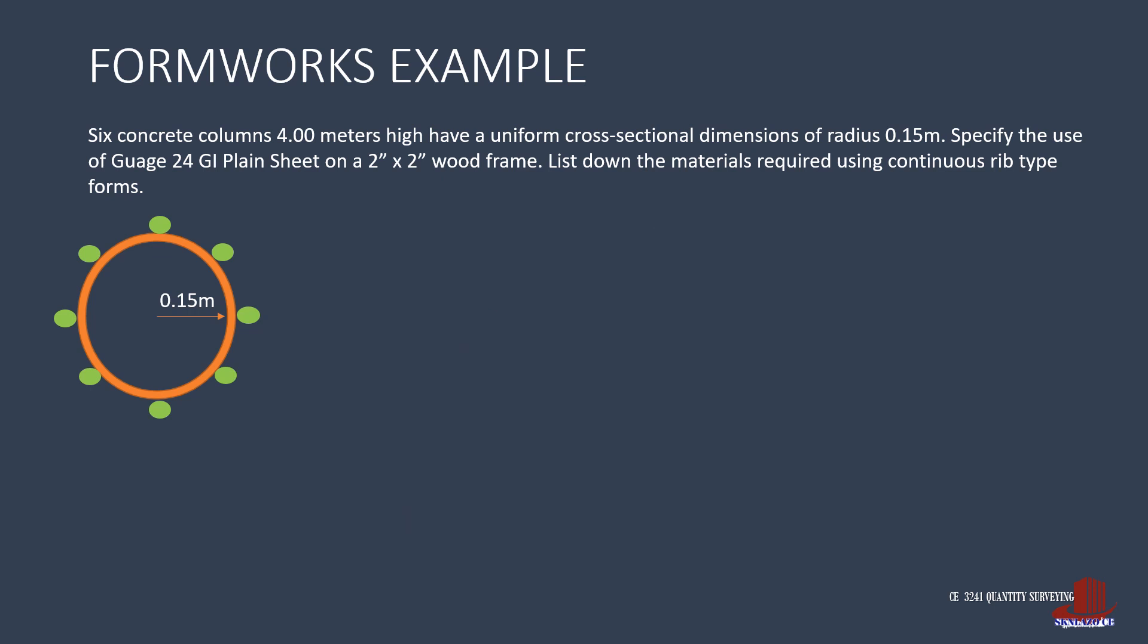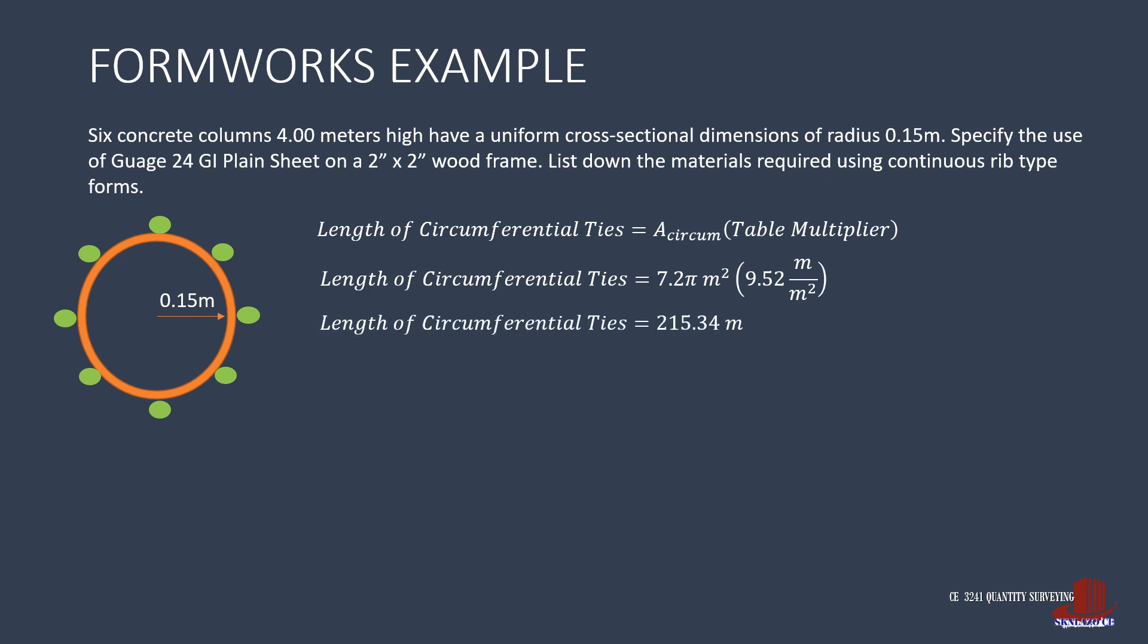With the vertical ribs, we also compute the circumferential ties with the same procedure, and only a different factor. So the length of circumferential ties is the area of 7.2π times the factor 9.52, giving 215.34 meters, which can then be computed into a 6 meter commercial length, giving 36 pieces of steel bars by 6 meters.